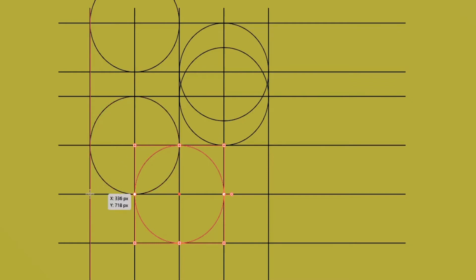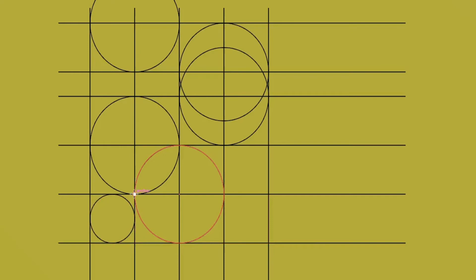Now maintain only Shift and then click and drag to make a circle from this point to this point. Again maintain Shift and Alt and make a circle like this.